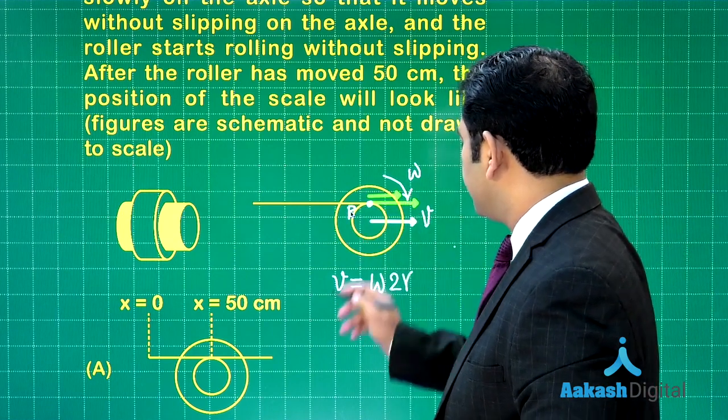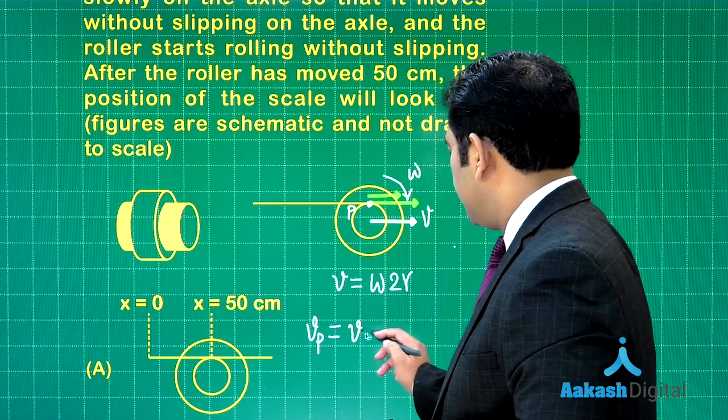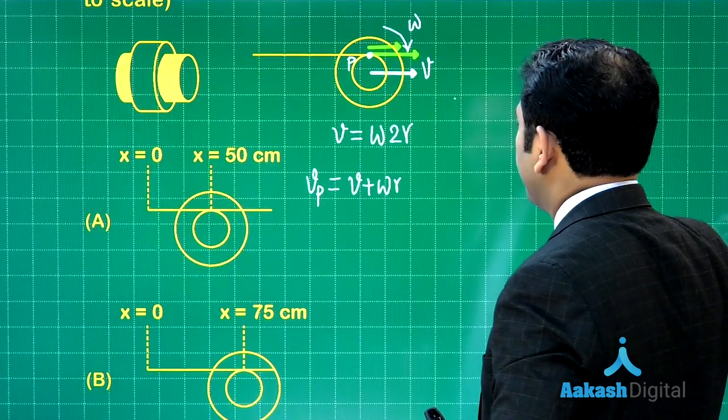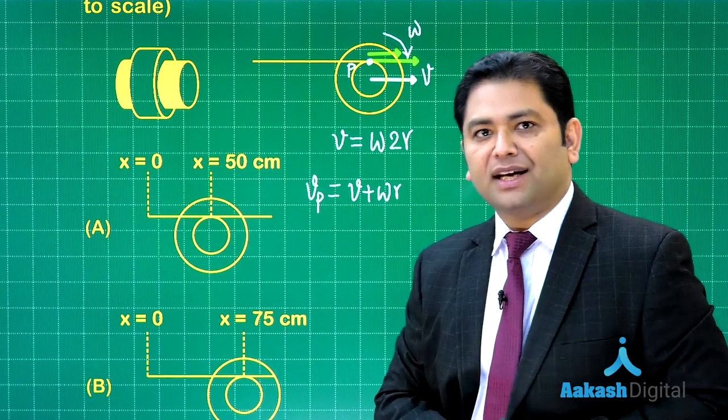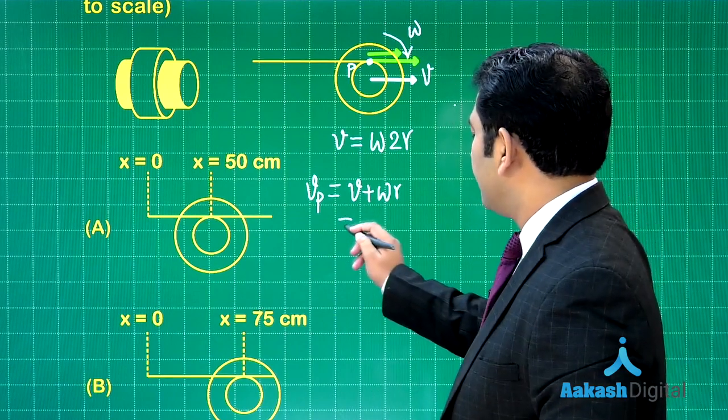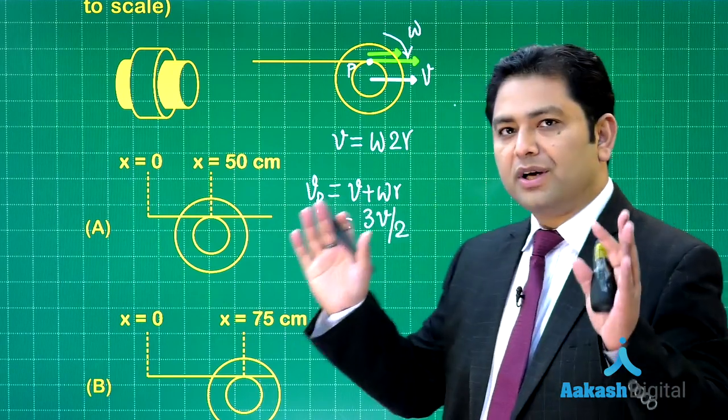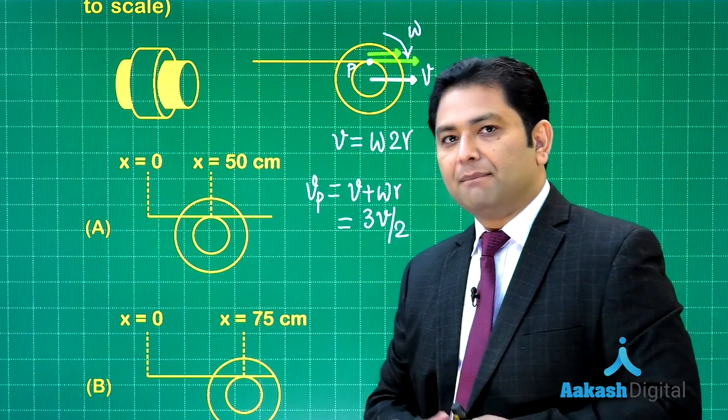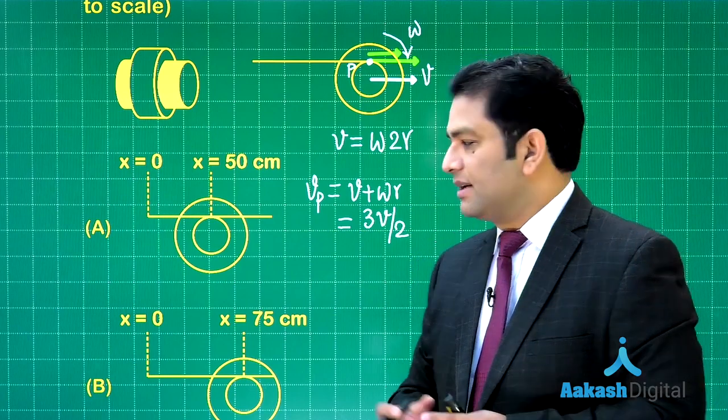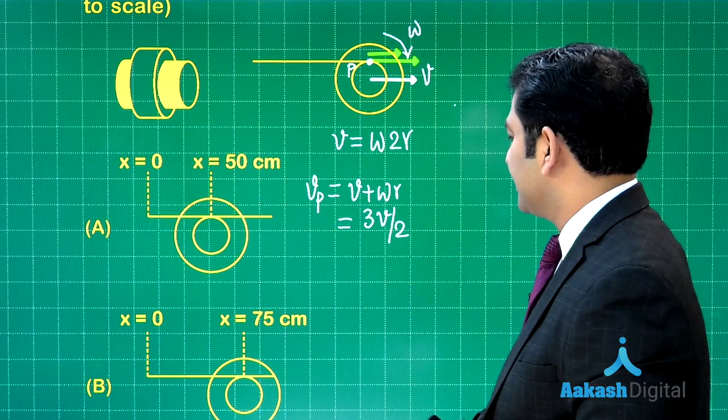You can easily verify the direction. What would be the net velocity of this point? If I call this point as P, this particular point, the velocity of point P would be V plus omega multiplied by R. Now the value of omega can be put as V by 2R, and if you do that, the value of velocity comes out to be 3V by 2. So now we are almost done.